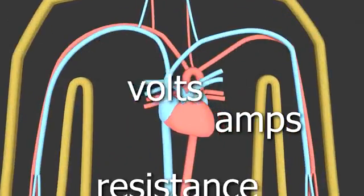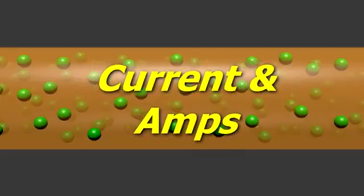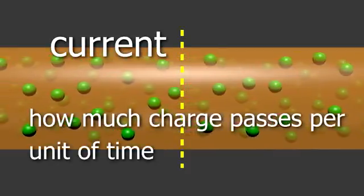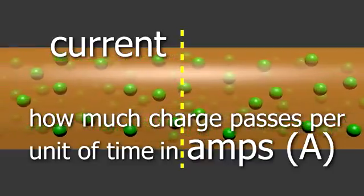You can't have amps without volts, and resistance plays a part too. What are current and amps? Current is just a measure of how much charge passes a point over a period of time. It's in units of amps.